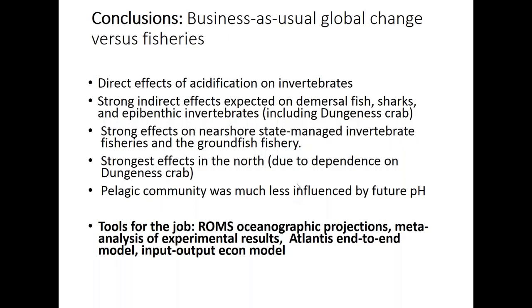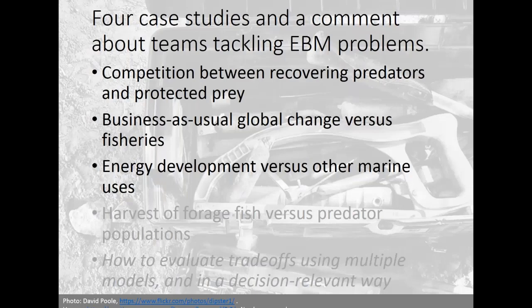The take-home messages: we see direct effects of ocean acidification on invertebrates from the meta-analysis by Bush and McElhaney; indirect effects throughout the food web on demersal fish, sharks, and Dungeness crab — a high-value species. Essentially we see trade-offs between global CO2 emissions driven by individual choices and local impacts on ports and people relying on Dungeness crab. Those effects are strongest in the north, and pelagic species were less influenced by future pH scenarios. The tools for the job: ROMS oceanographic model, meta-analysis of experimental results, Atlantis end-to-end model, and input-output economics model.